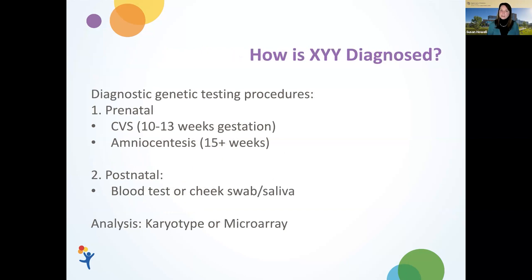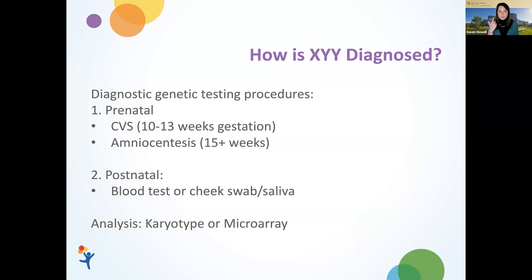When we have a positive screen, diagnostic genetic testing options are either prenatal or postnatal. Prenatally, chorionic villus sampling (CVS) is done at 10 to 13 weeks gestation, taking a sample of the placenta to analyze chromosomes. Amniocentesis, sampling fluid from around the fetus, can be done at 15 weeks or later. About half the time, families defer to postnatal testing after the baby is born — via cord blood test, cheek swab, or saliva sample to analyze the chromosomes.